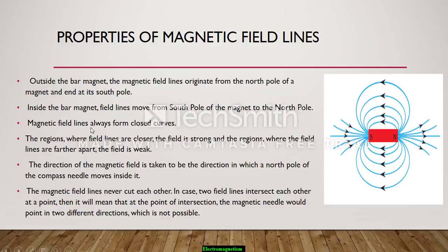Now, magnetic field lines always form closed curves. We can see that it is already closed. It is starting from north and ending at south.